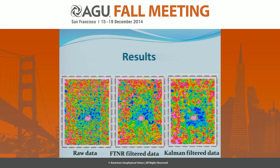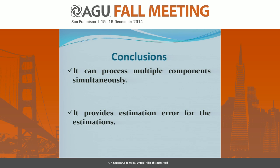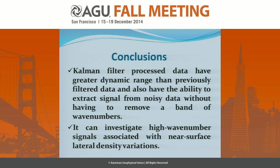We then produced 2D plots: this is the raw data, this is the Bell Geospace filtered data, and this is our Kalman filter data. We also checked our results against faults and features previously detected in the area and found good agreement. We can conclude that the Kalman filter provides the best linear estimations, can process multiple components simultaneously, and provides estimation error so we can assess accuracy. Kalman filter-processed data have greater dynamic range than previously filtered data and have the ability to extract signal from noisy data without removing a band of wavenumbers, and can investigate high-wavenumber signals associated with near-surface lateral density variations.